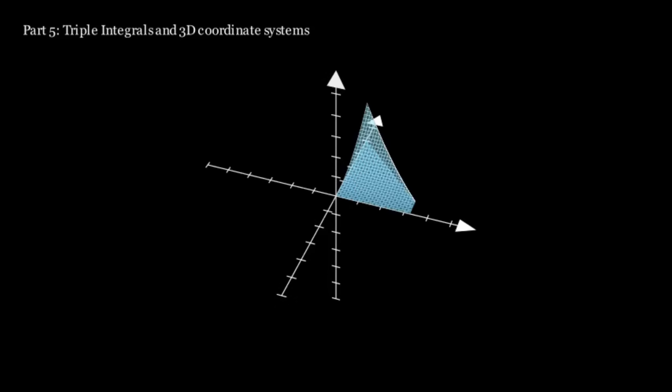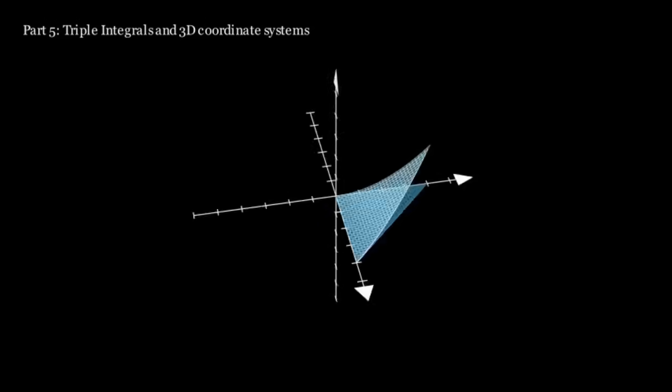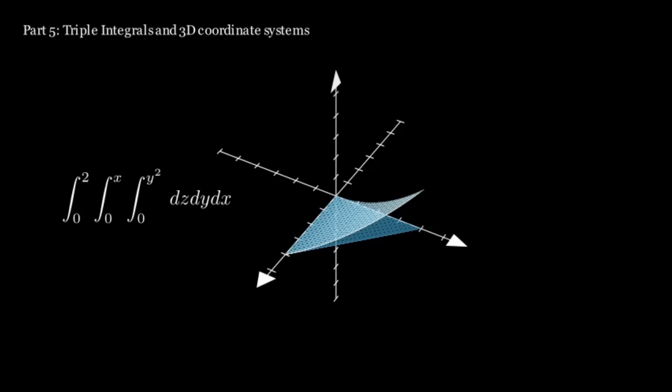Part 5: Triple integrals and 3D coordinate systems. Triple integrals can also be used for volume. With triple integrals, we can integrate any 3D region as long as we can define it with three different boundaries instead of two. Here, x goes from 0 to 2, y goes from 0 to x forming a triangular base, and z goes from 0 to y squared creating a sort of parabolic shape.